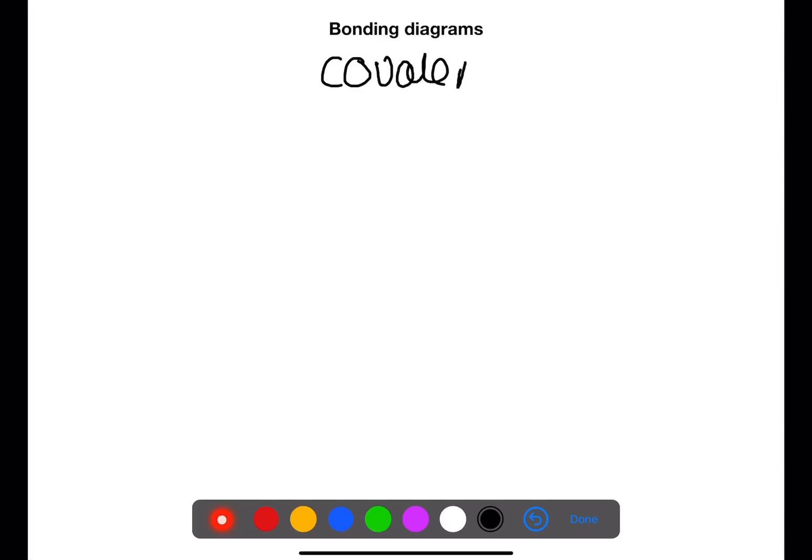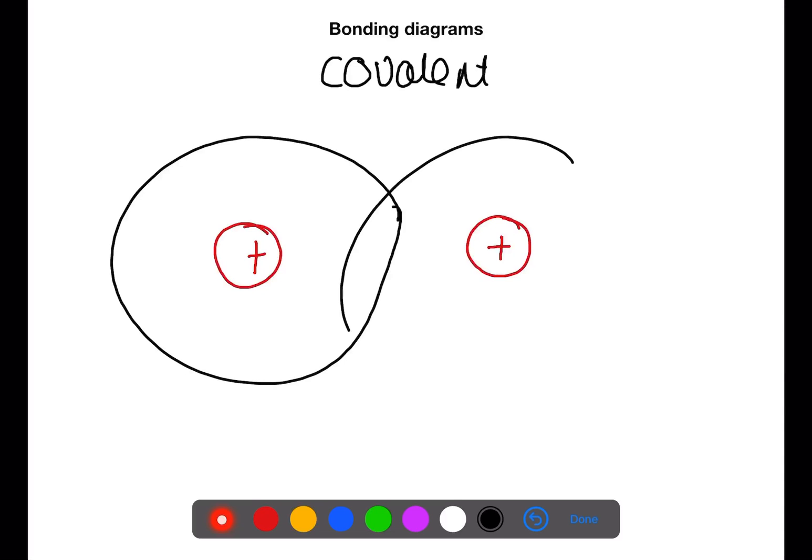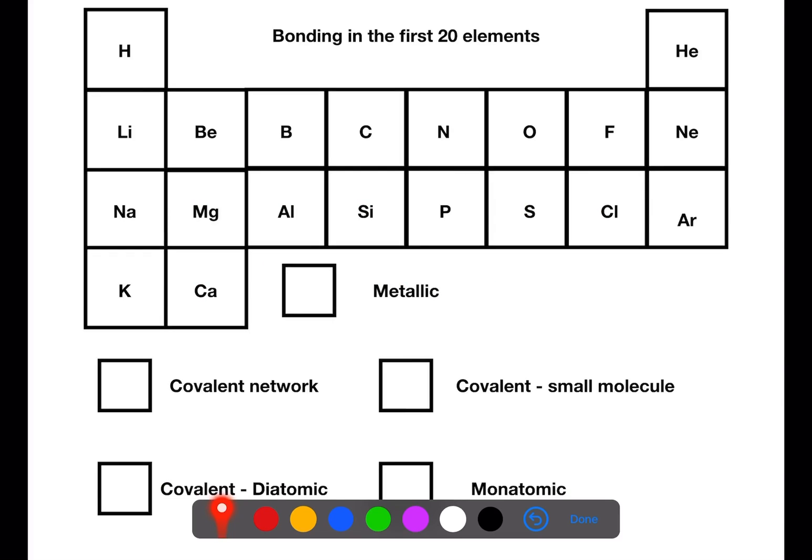Our second bonding diagram is going to be for covalent bonding. I'm going to draw a hydrogen molecule which has a positive nuclei. We then have overlapping electron shells. Within the overlap region we have two negative electrons which are shared between the two nuclei. For this exercise we're going to label the periodic table. You're expected to know the first 20 elements and their bonding structure.